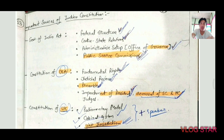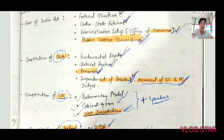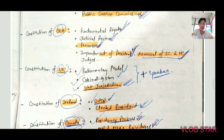An important point: why is India called a 'bag of borrowings'? Two-thirds of the Constitution is taken from the Government of India Act 1935. From it came the federal structure, central-state relationship, administrative setup, office of Governor, and Public Service Commission.